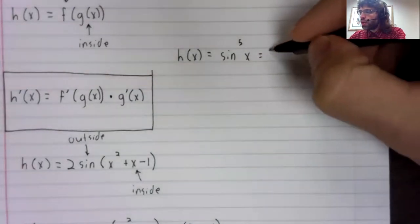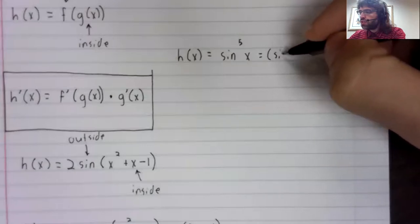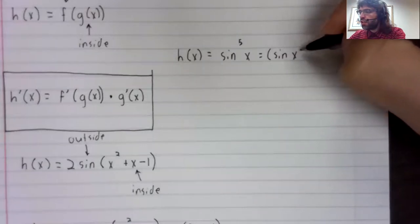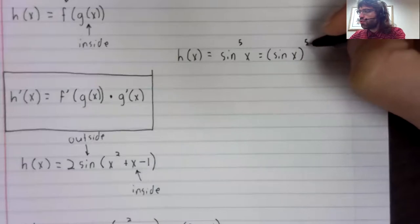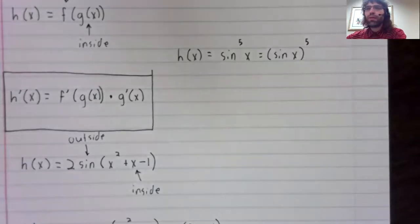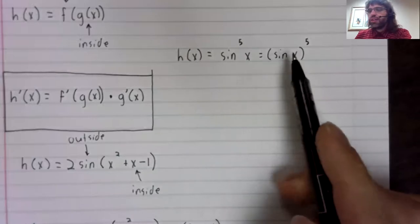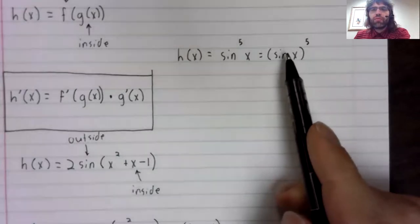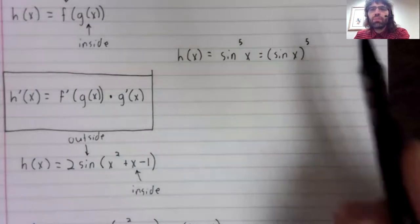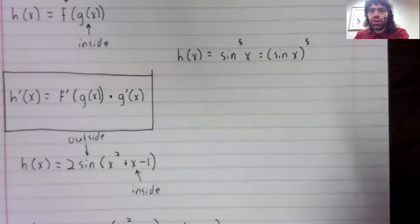Let's say that h of x be the sine of x to the fifth power. Another way of writing this is the sine of x all raised to the fifth power. And this might make it more obvious that we've got composition going on.